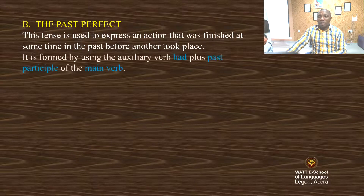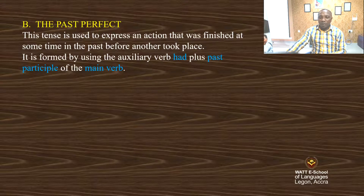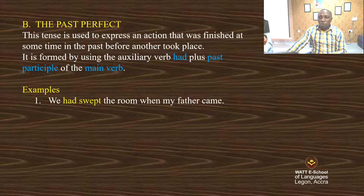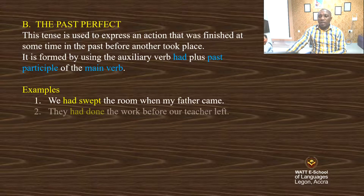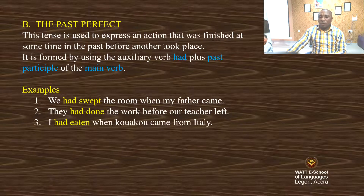It is formed by using an auxiliary verb 'had' plus the past participle of the main verb. Examples: We had swept the room when my father came. They had done their work before our teacher left. I had eaten when Kwaku came from Italy.